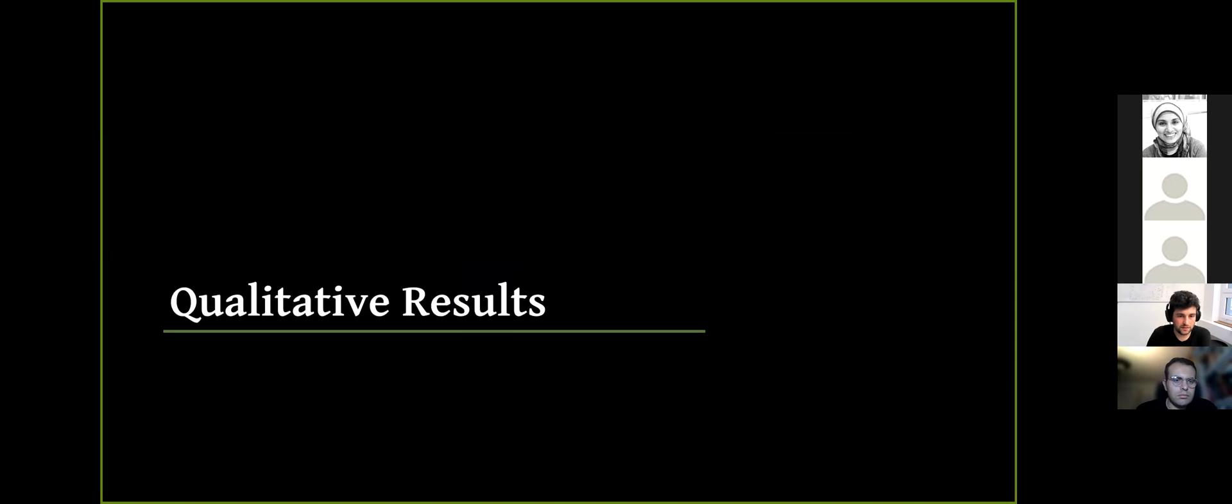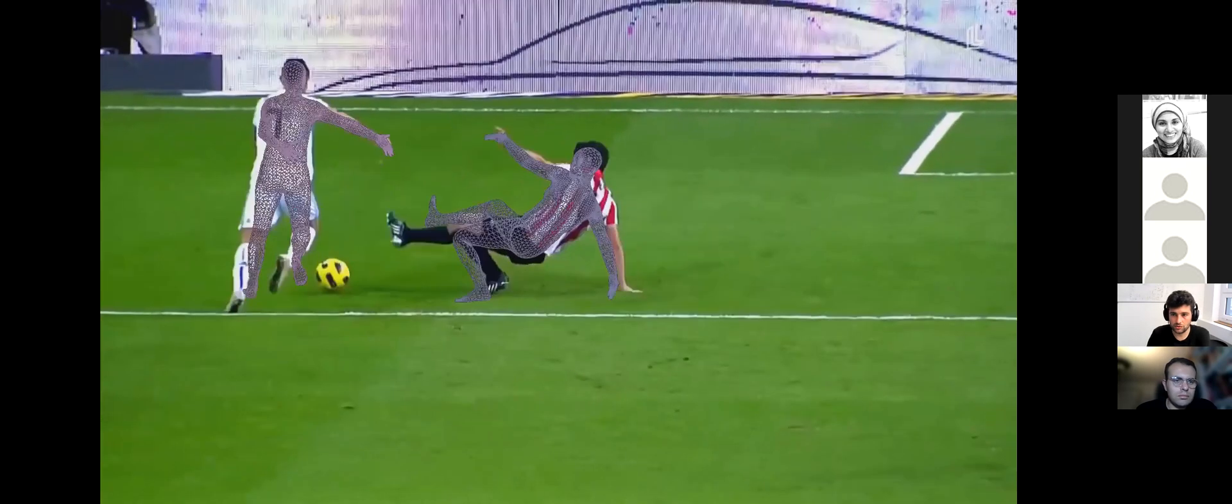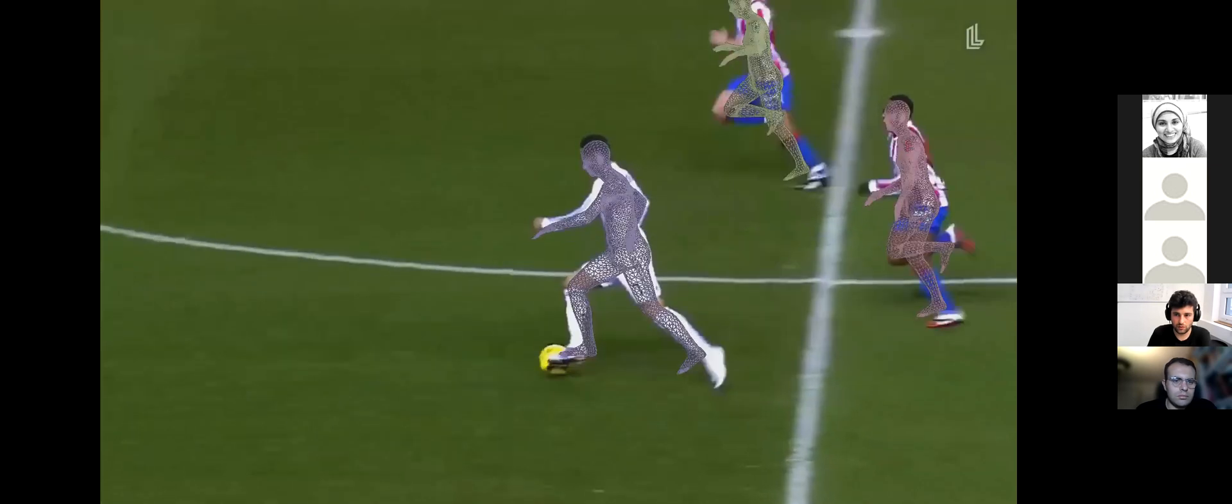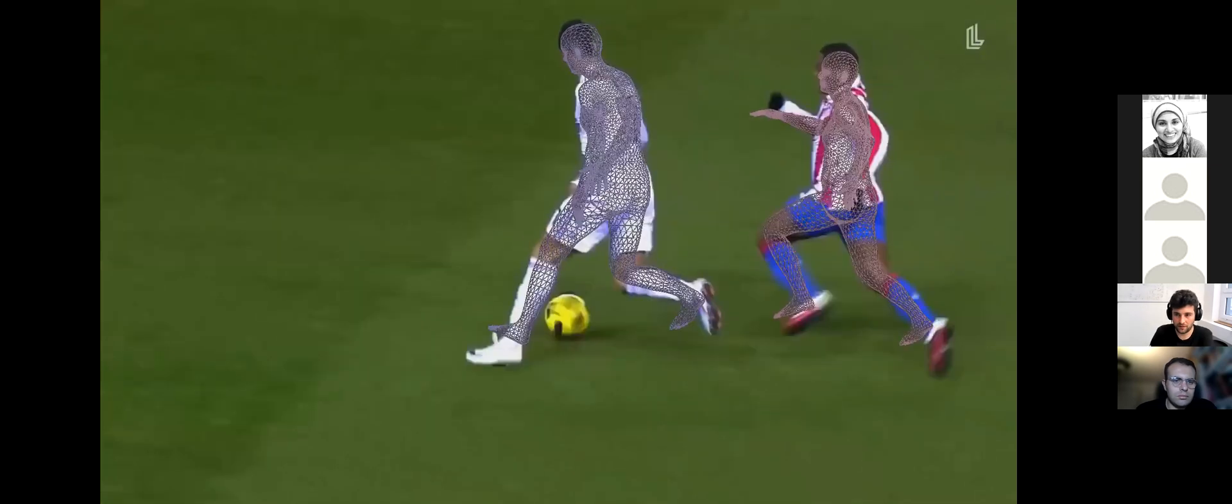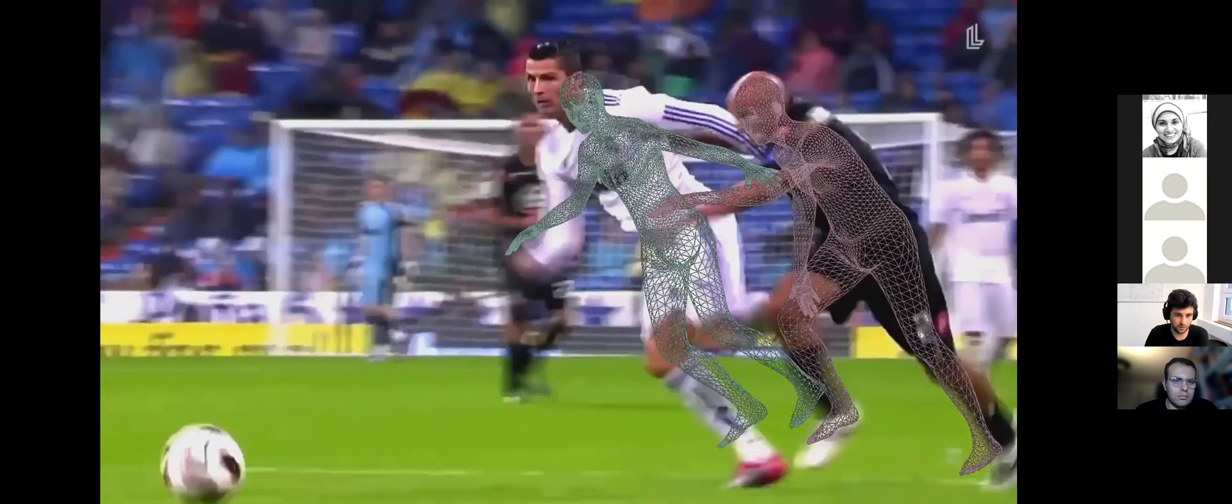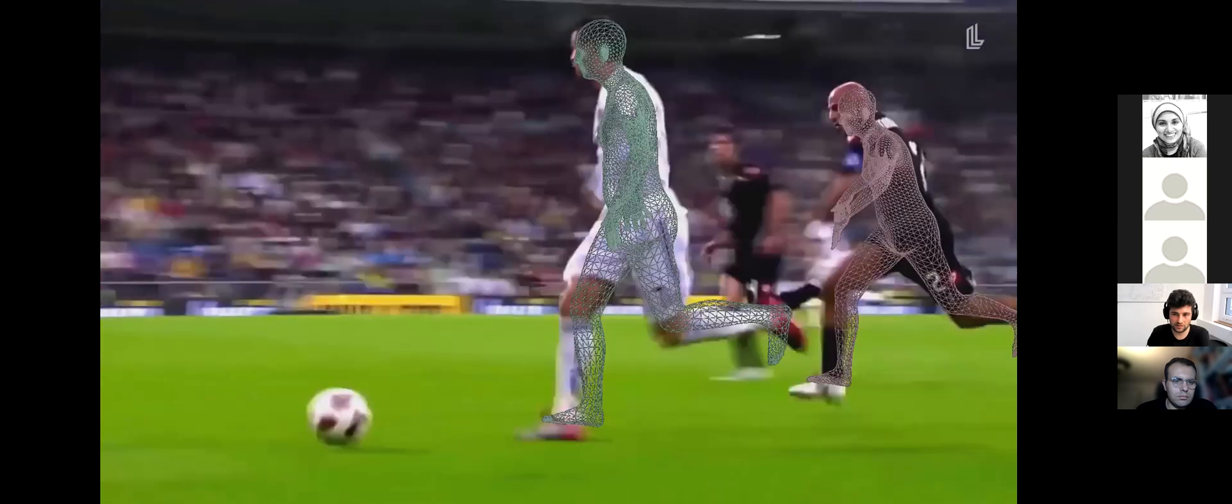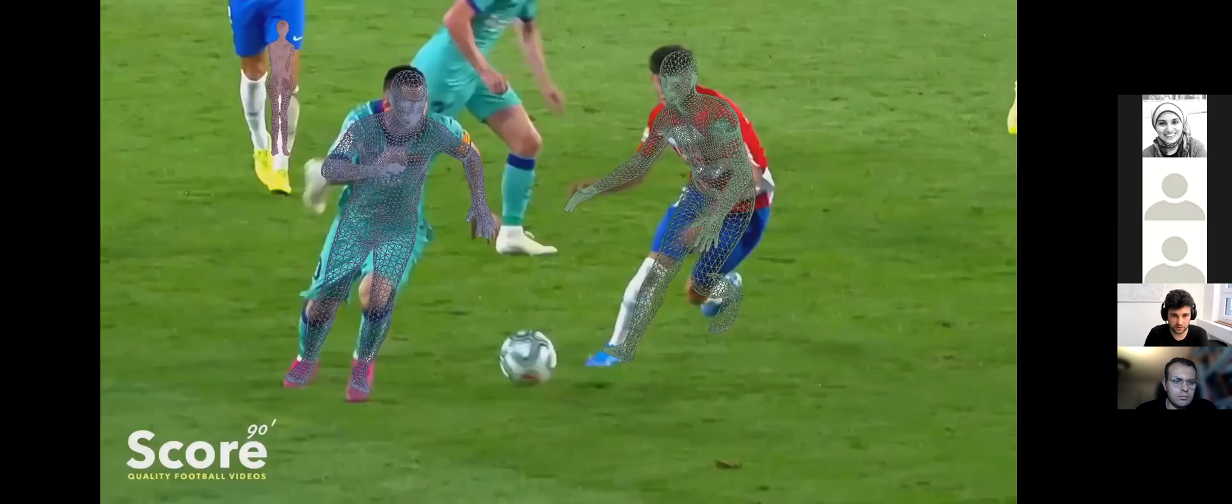And some qualitative results. This sequence shows some diverse range of motions from a soccer game. So as you can see, VIBE performs very well in the case of motion blur too. And so in these results, we obtain multi-person results using a real-time multi-object tracker. So it runs almost in real-time.